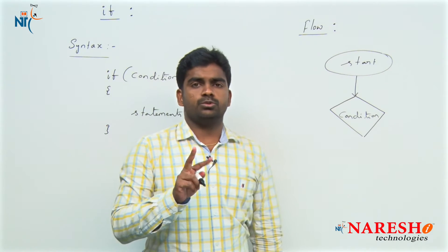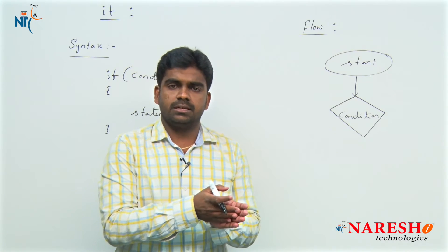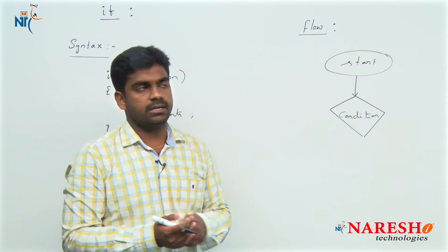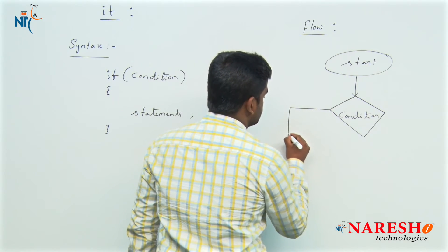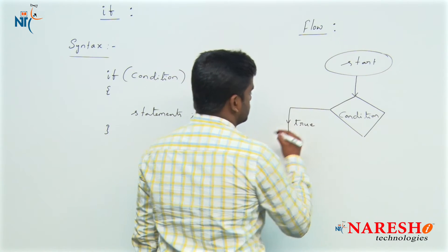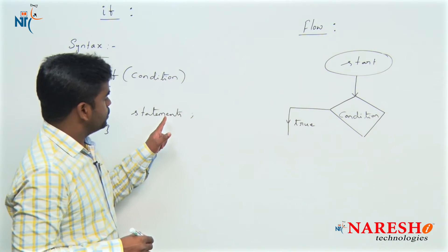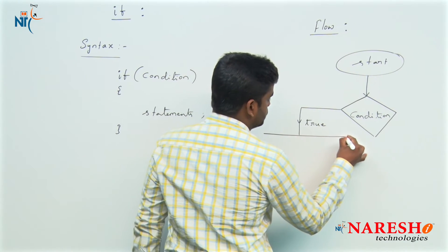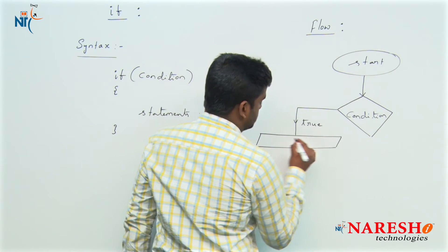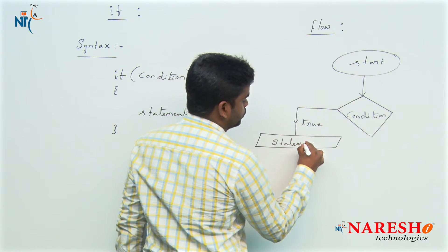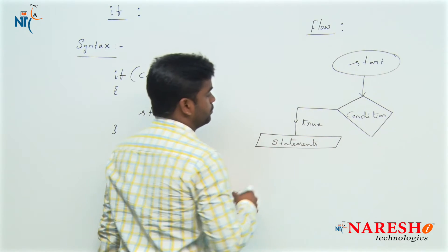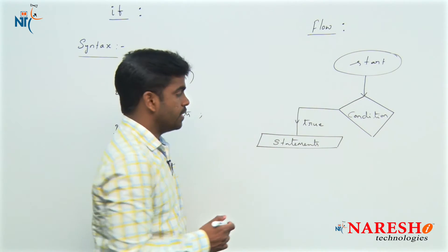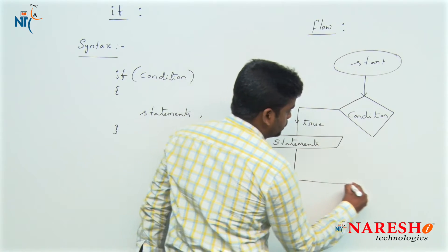For every condition, two options are present: if the condition is true or if it has failed — true or false. If the condition is true, all the statements defined inside the block execute. Statements are represented with a parallelogram in flowchart terminology. These are the symbols we use while writing the flow.